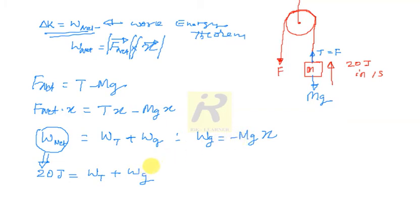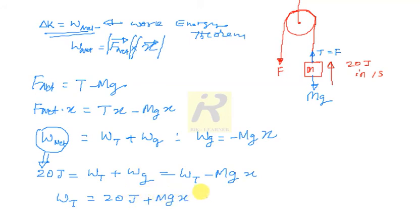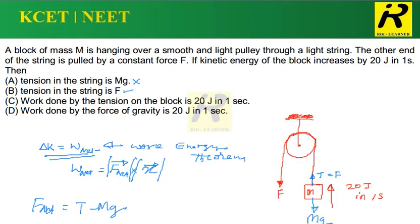Since Wg is negative, we write: Wt minus Mg·X equals 20 Joules, so Wt equals 20 Joules plus Mg·X. This implies work done by tension is more than 20 Joules. Option C says work done by tension on the block is 20 Joules in one second — that is wrong. The work done by tension is more than 20 Joules in one second, so Option C goes wrong.